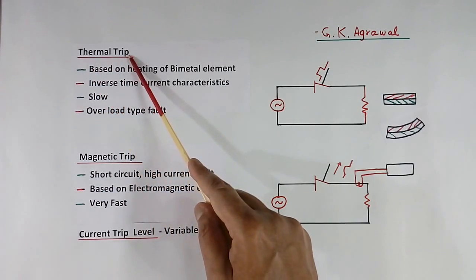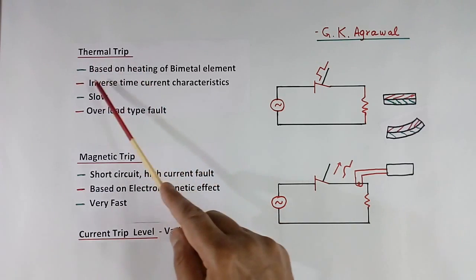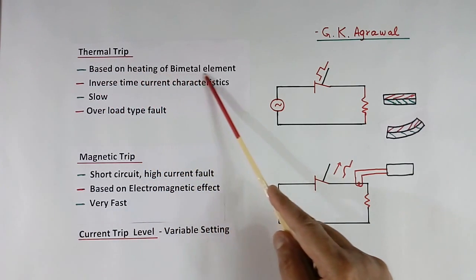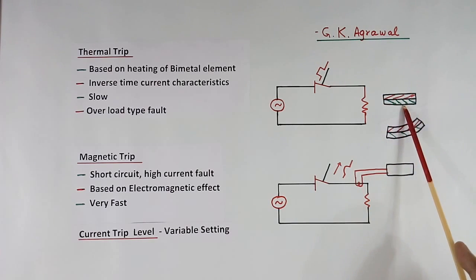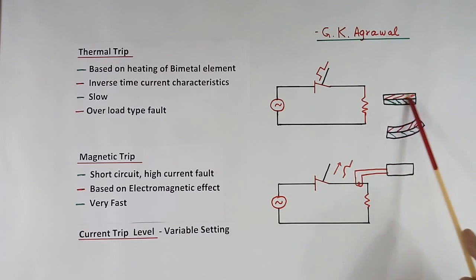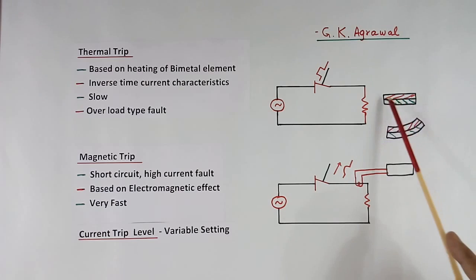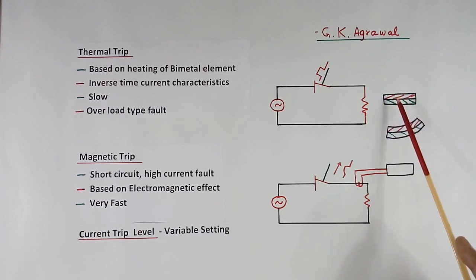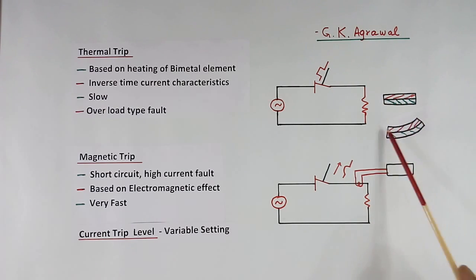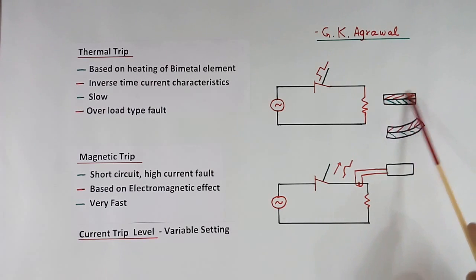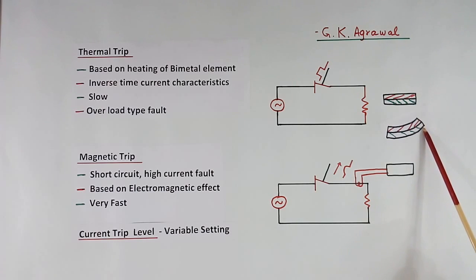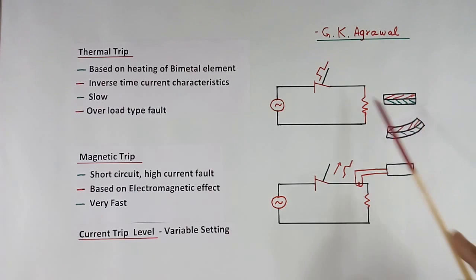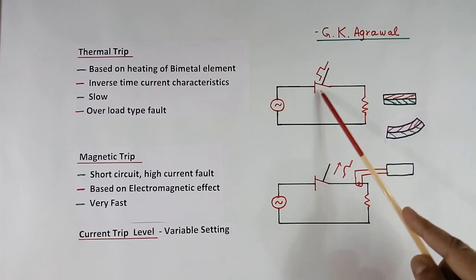Now, what is thermal trip? The thermal trip system is based on heating of a bimetal element. MCCB has one bimetal element. It has 2 types of metal. When it gets heated up, one metal will expand more than the other, so this strip will bend. This portion will move, and because of this movement, there is a mechanical arrangement which makes this contact open or trip.